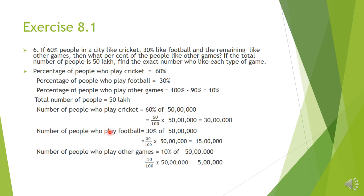Next, number of people who play football: 30% of 50 lakh. 30 by 100 into 50 lakh — two zeros of 100 and two zeros of 50 lakh cancel, leaving 50,000 and 30. Multiplying, we get 15 lakh. For other games, 10% of 50 lakh: 10 by 100 into 50 lakh. The zeros cancel and 10 into 50,000 gives us 5 lakh.